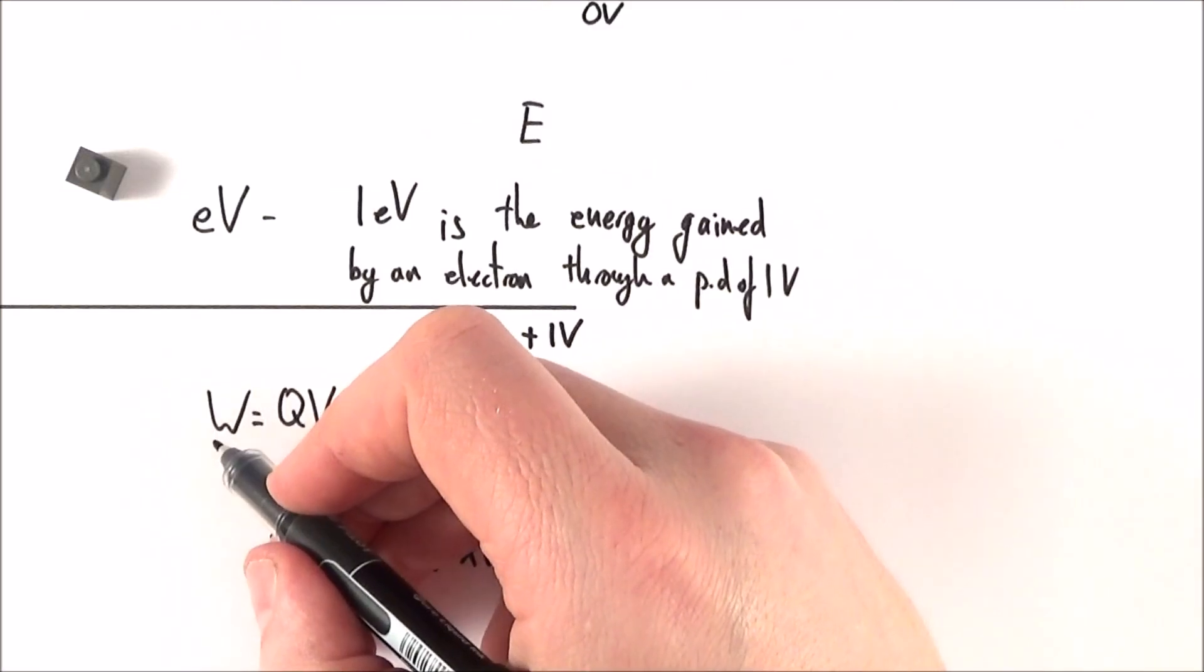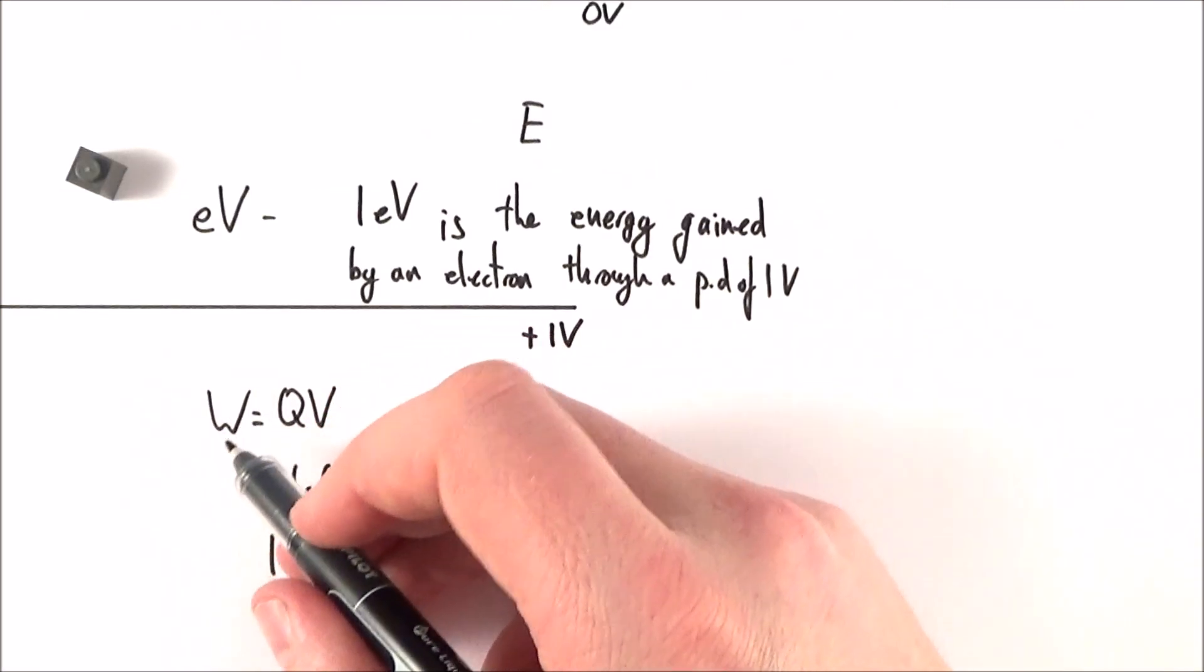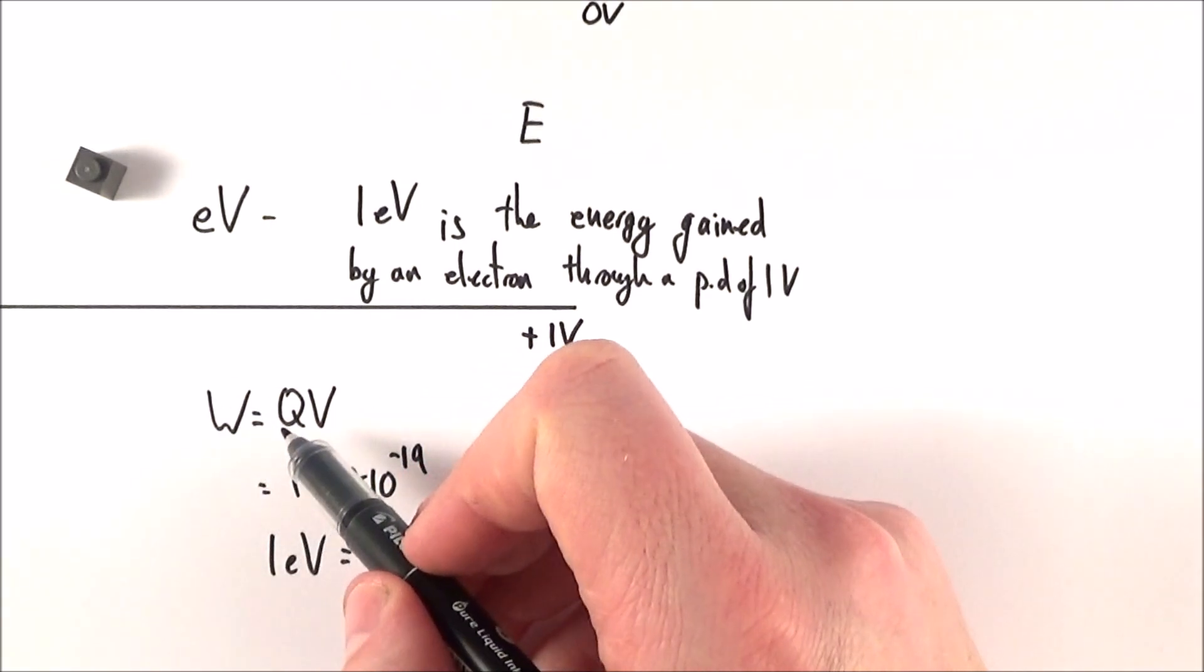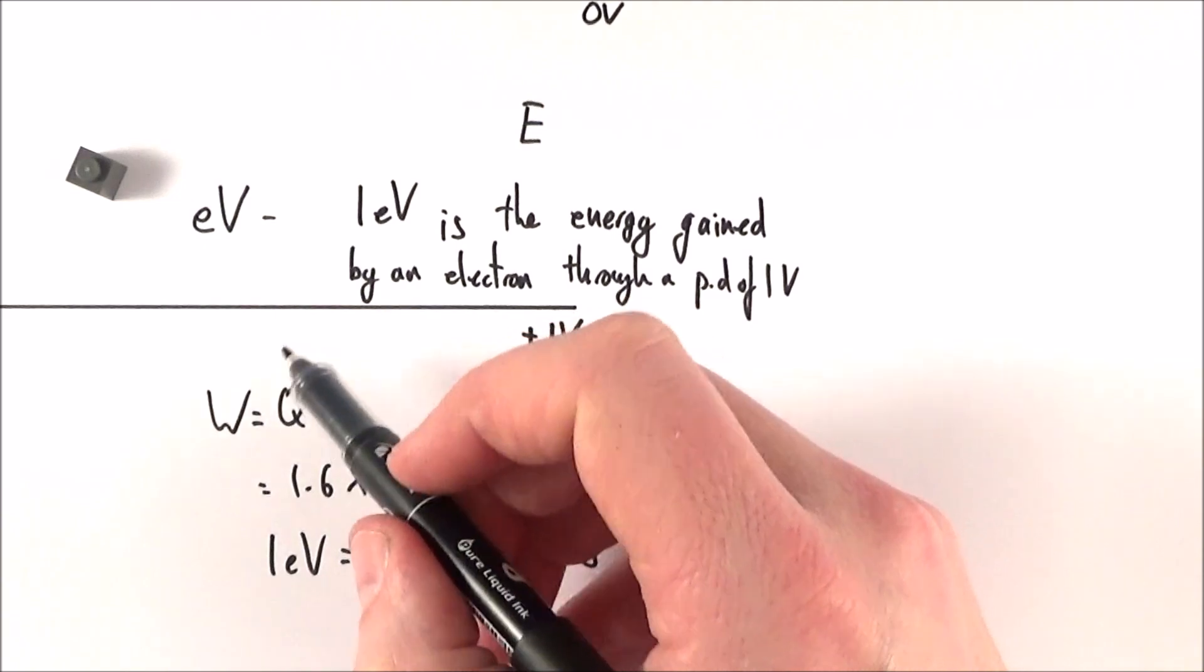To actually calculate one electron volt in joules, we can look at the equation W equals QV, where the work done is equal to the charge times the potential difference.